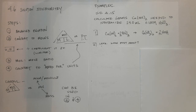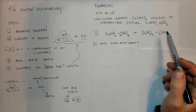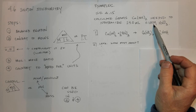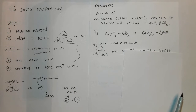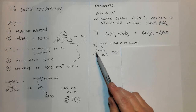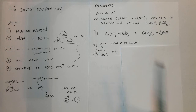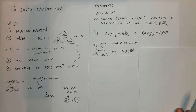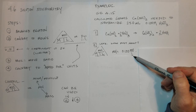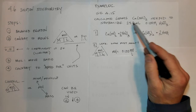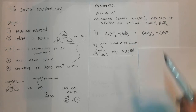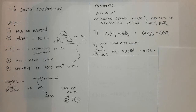Step number two is to convert to moles. Re-read the problem and look to see which things you know the most about. It turns out we know the most about HNO₃ — we know a concentration and a volume, so we can go right to the molarity triangle. We find moles by taking molarity times liters: 0.1 moles per liter times 0.025 liters. 0.025 times 0.1 is 0.0025 moles.